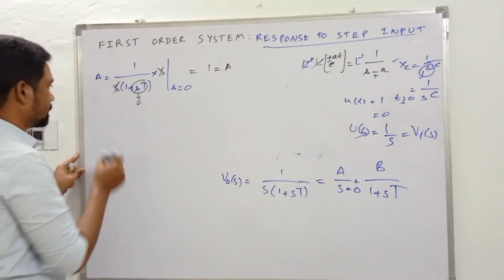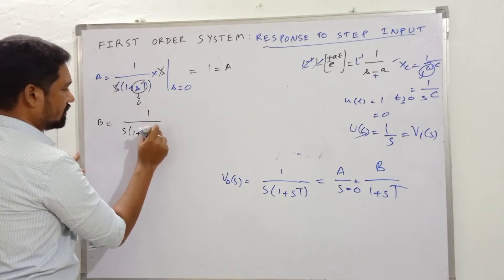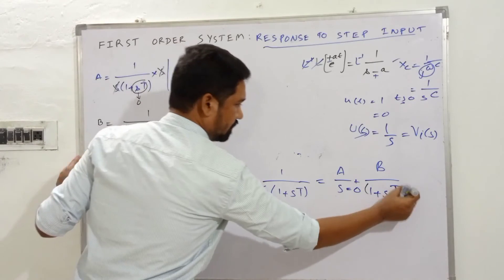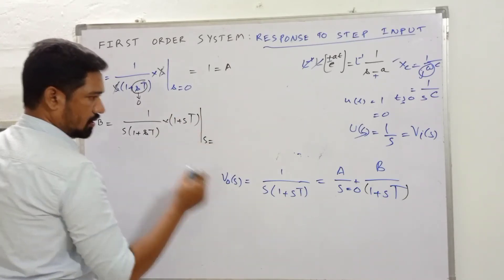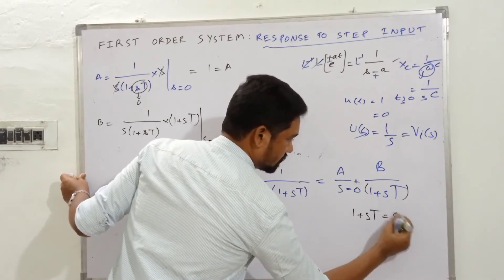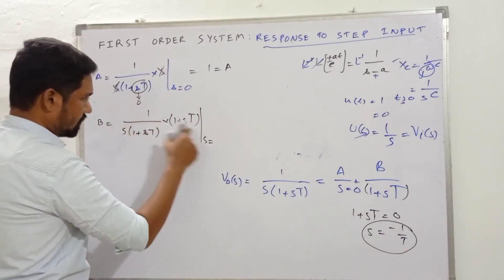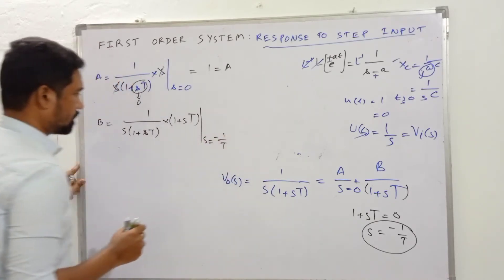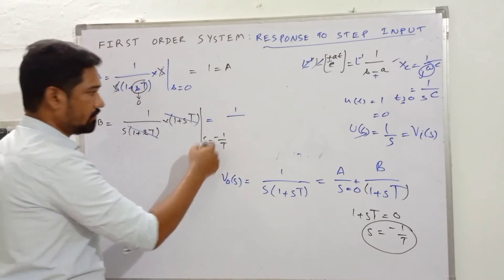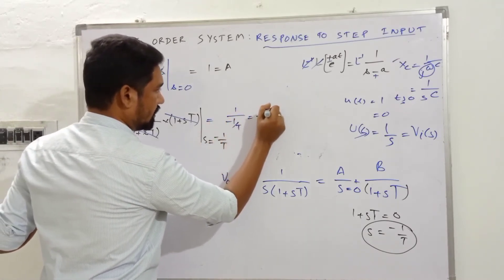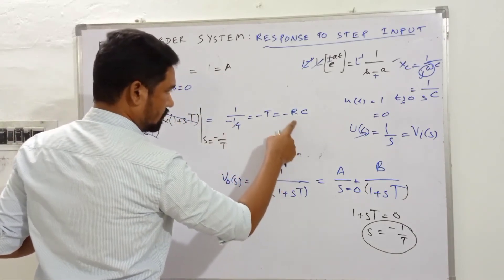To evaluate residue B: multiply 1/(s(1 + sT)) by (1 + sT), then set 1 + sT = 0, which gives s = −1/T. The (1 + sT) terms cancel, and substituting s = −1/T into 1/s gives 1/(−1/T) = −T = −RC. Therefore B = −RC.